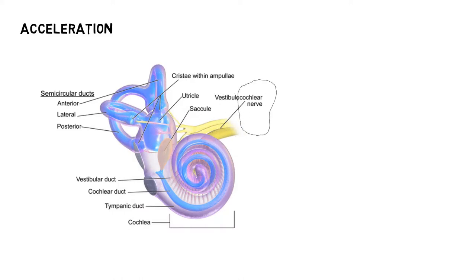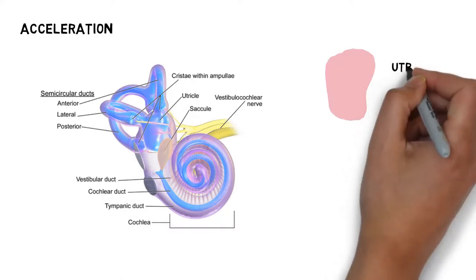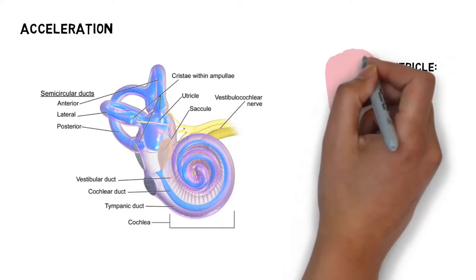The utricle is a small organ in the inner ear. It is divided in half by a membrane called the striola.